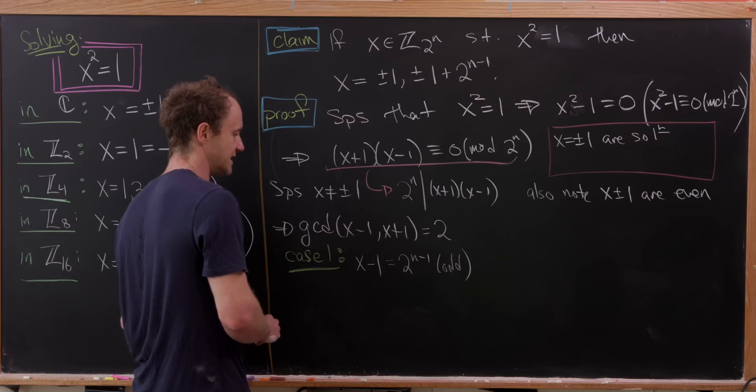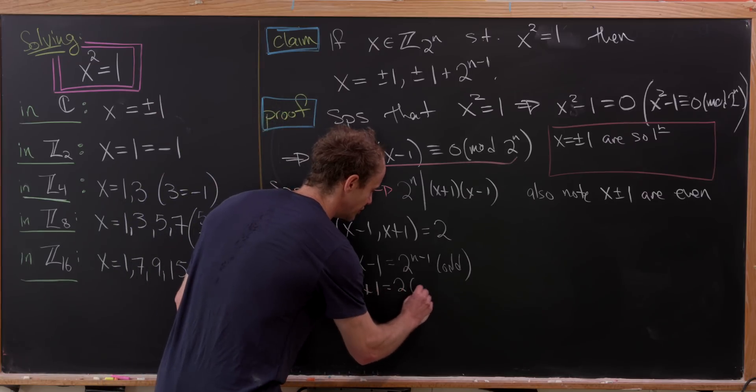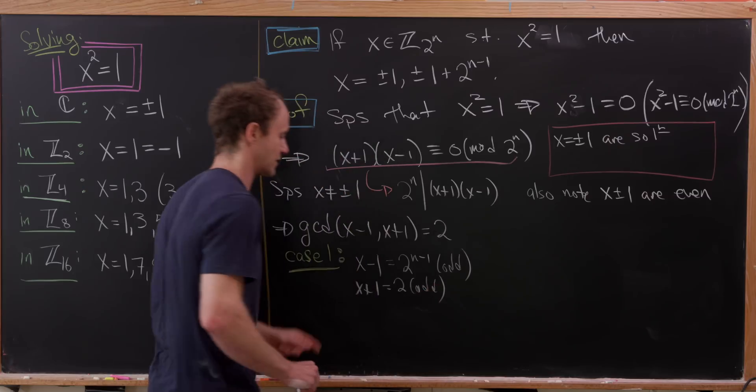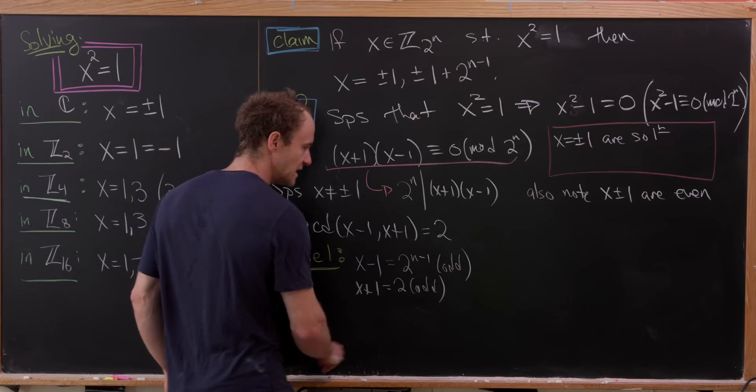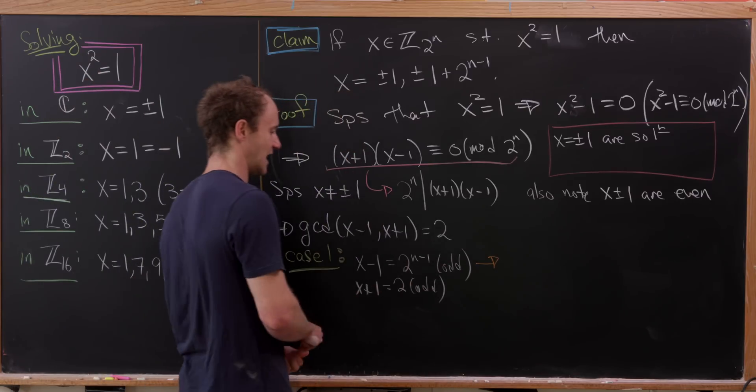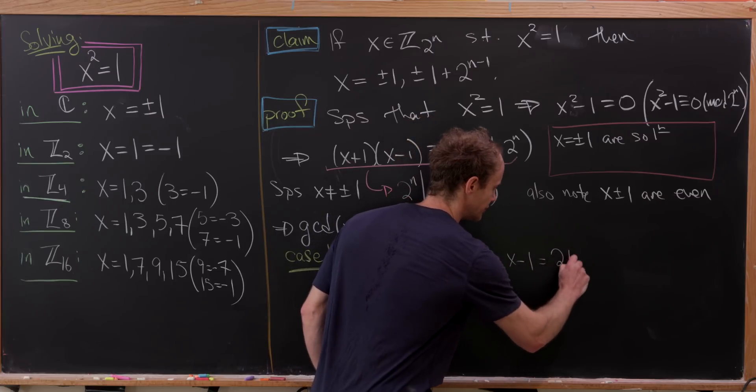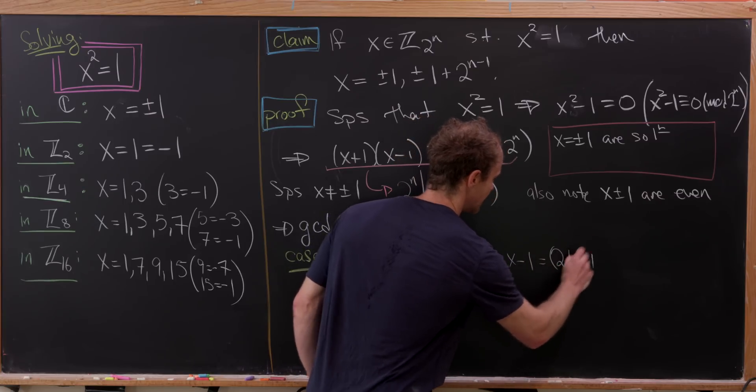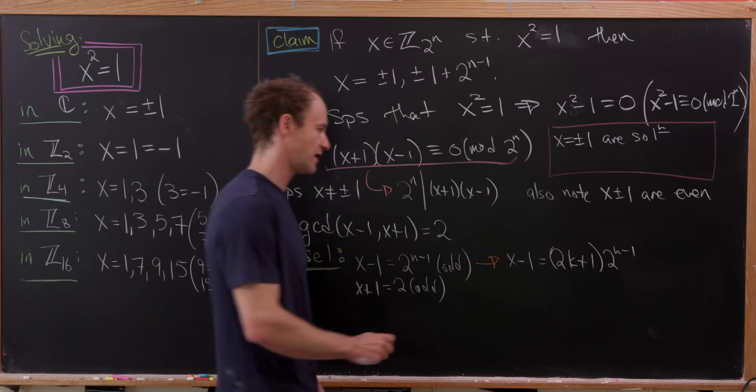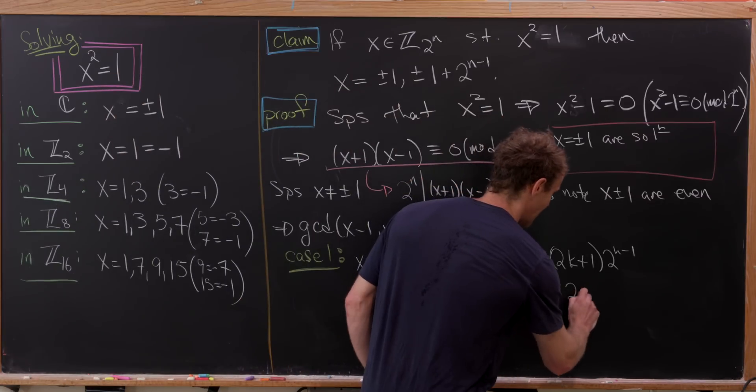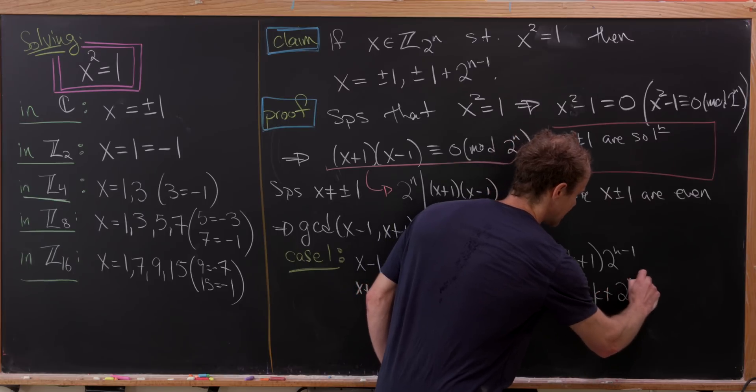But now if x-1 is 2ⁿ⁻¹ times an odd, that means x+1 is 2 times an odd number. Again, x-1 got most of the factors of 2. But now let's go down this line right here and see that this means that x-1 is equal to (2k+1)×2ⁿ⁻¹. That's our odd number times 2ⁿ⁻¹. We can multiply this out and see that we get 2ⁿ×k + 2ⁿ⁻¹.